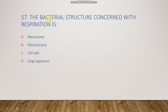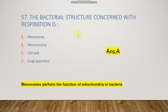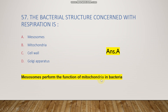The next question: the bacterial structure concerned with respiration is mesosomes, mitochondria, sylval, or Golgi apparatus? The right answer is option A, mesosome. Mesosomes perform the function of mitochondria in bacteria, because bacteria lack mitochondria but have mesosomes — they are the mitochondria-like organelle present in bacteria.